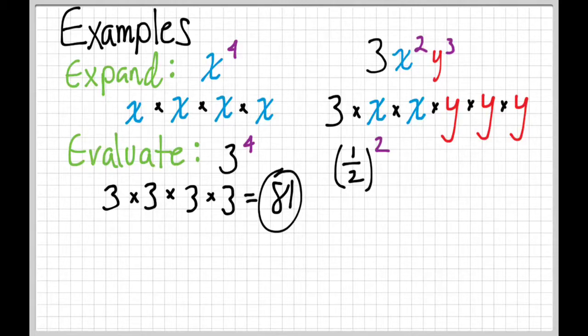One-half squared is one-half times one-half. When we multiply fractions, we do the top times the top, so 1 times 1 is 1, and the bottom times the bottom, so 2 times 2 is 4. So one-half squared is one-fourth.